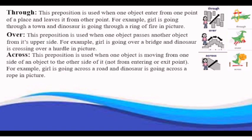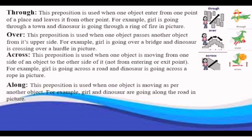Along is used when one object is moving as per another object. For example, girl and dinosaur are going along the road, in picture.